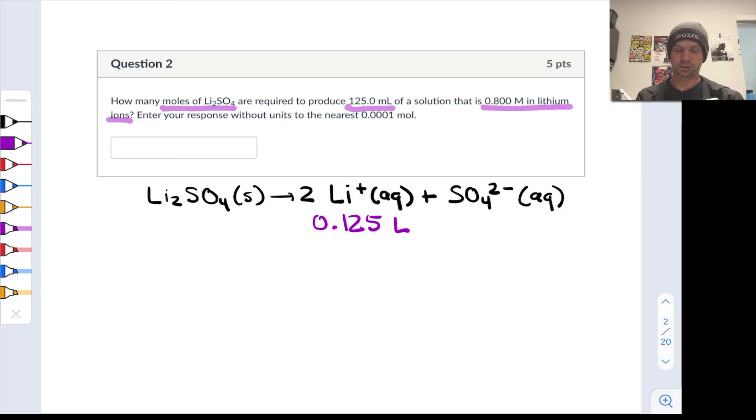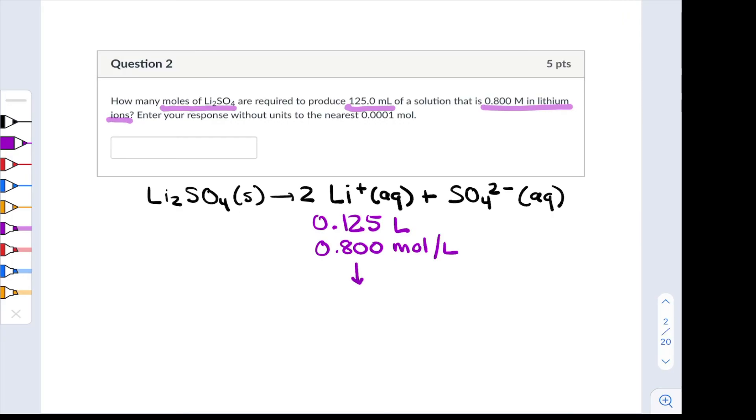I can multiply these to figure out my target number of moles of lithium cations and when I do that I arrive at a target number of moles of lithium cations of 0.1 moles of Li+.